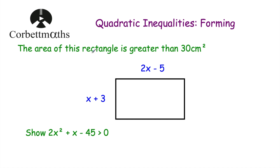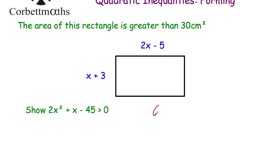We're told the area of this rectangle is greater than 30 centimetres squared. To find the area of the rectangle we multiply the length by the width. So the length is 2x minus 5, the width is x plus 3, and if we times them together that's the area, which is greater than 30.